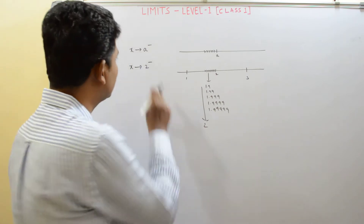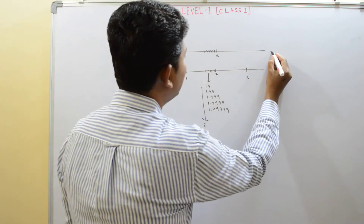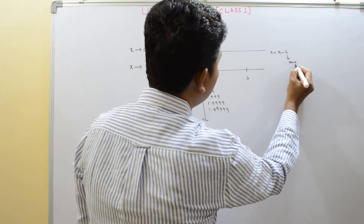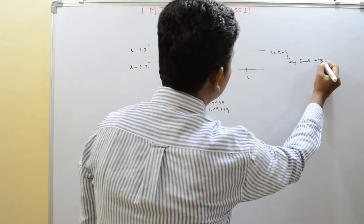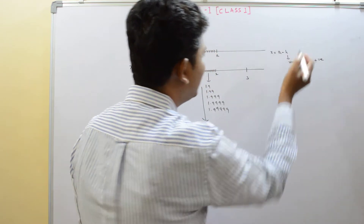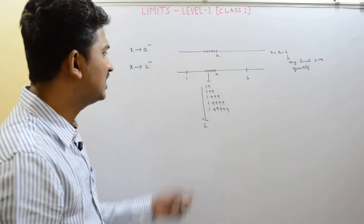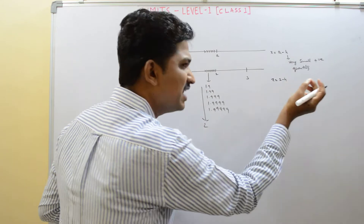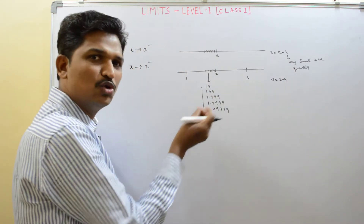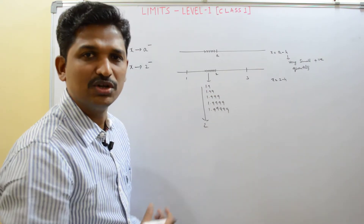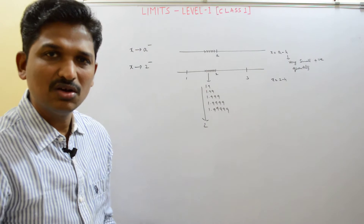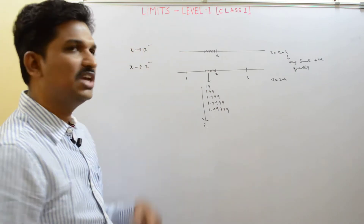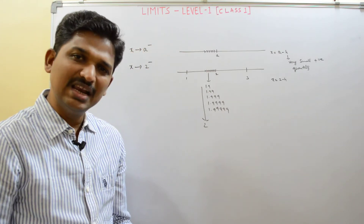This can be expressed as: x tends to a minus means x equals a minus h, where h is a very small positive quantity. For the example of x approaching 2, we write 2 minus h. However small you take h, you get numbers that are that much nearer to 2. So x tends to a minus means all x values are less than a and very, very nearer to a.